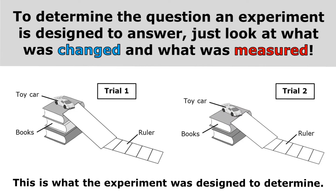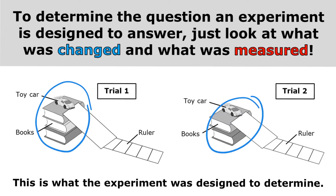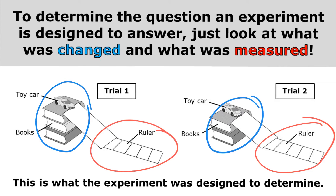You may be shown an experimental investigation and then asked: what question was this designed to answer? To determine the question an experiment is designed to answer, just look at what was changed and what was measured. Here we changed the height of the ramp, and we measured the distance that the car rolled. So this experiment must have been designed to answer the question: how does the height of the ramp affect the distance that the car rolls? This is also what the experiment was designed to determine — instead of a question, it's a statement: this experiment was designed to determine how the height of the ramp will affect the distance the car rolls.